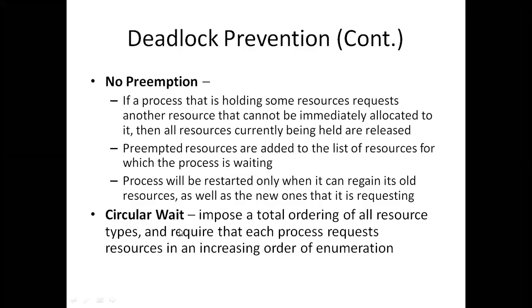For circular wait prevention: the circular wait means P1 waits for a resource allocated to P2, P2 waits for one allocated to P3, and P3 waits for one allocated to P1. To avoid this, each process must request resources in an increasing order of enumeration only. P3 must request resources from P4 only, not from P1 or P2. Each process requests resources in an increasing order.